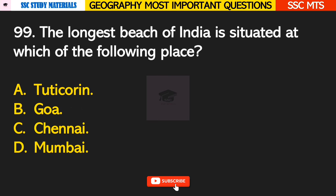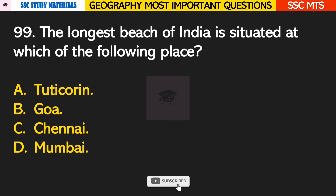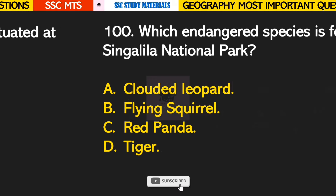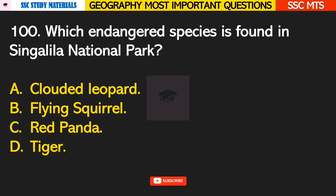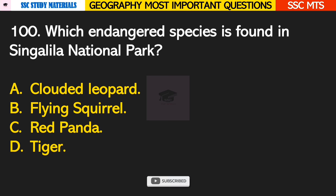Question number 99: the longest beach of India is situated at which of the following places? Answer C — Chennai. The longest beach of India is Marina Beach. Question number 100: which endangered species is found in Singalila National Park? Answer C — Red Panda.